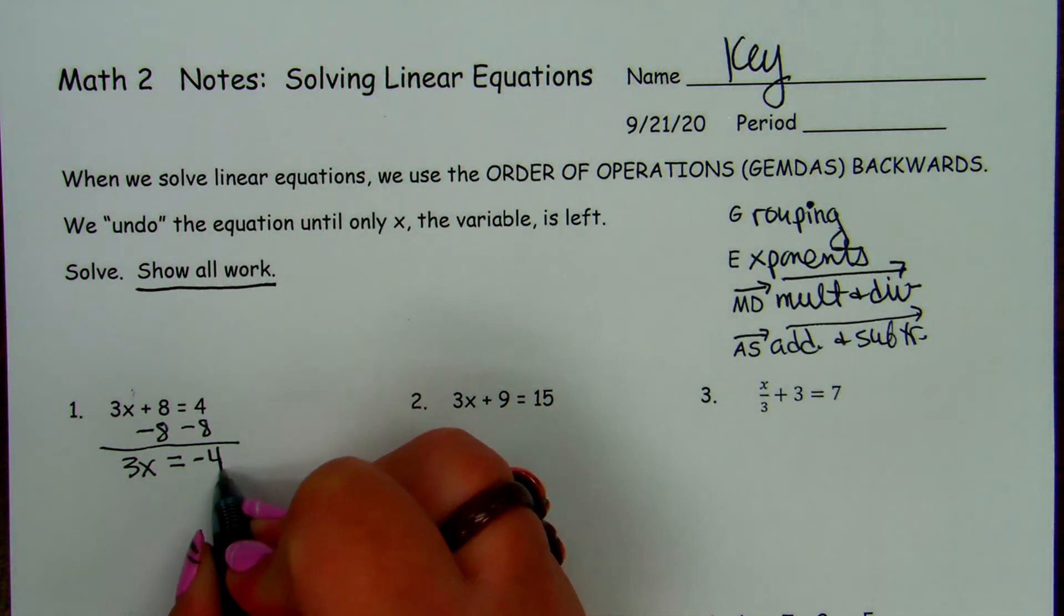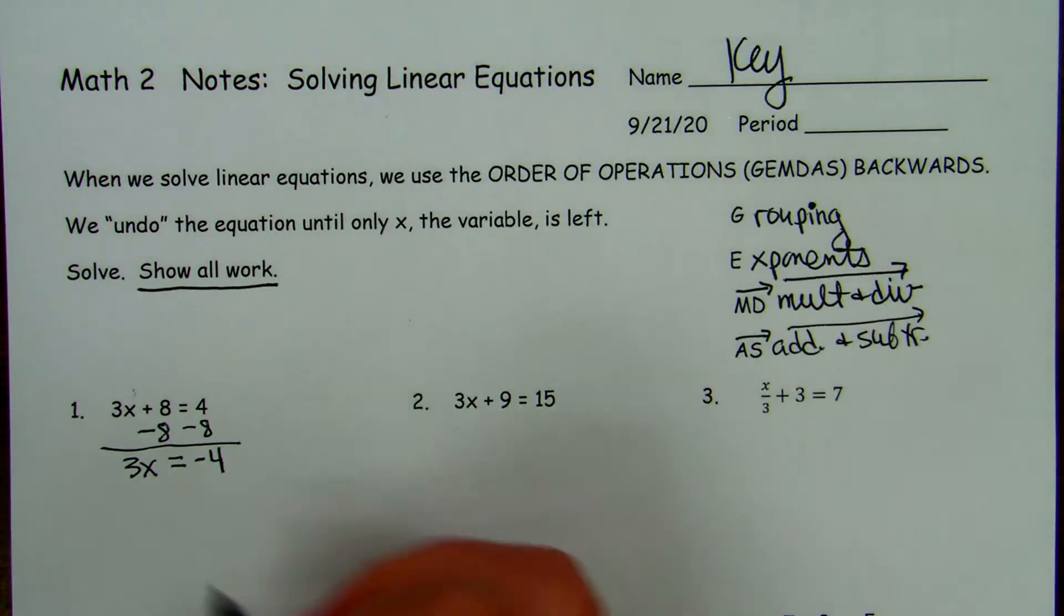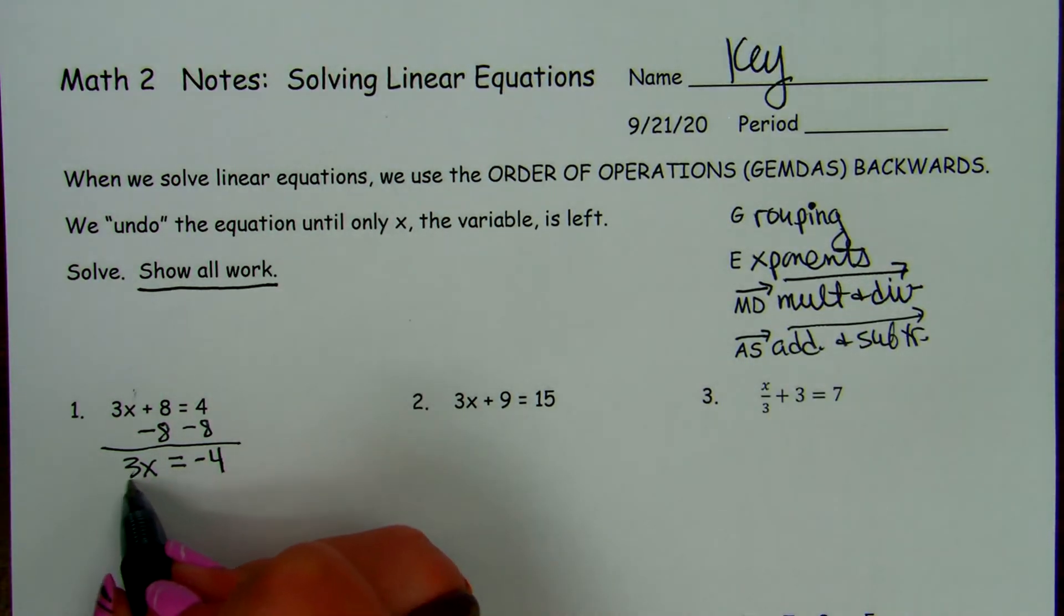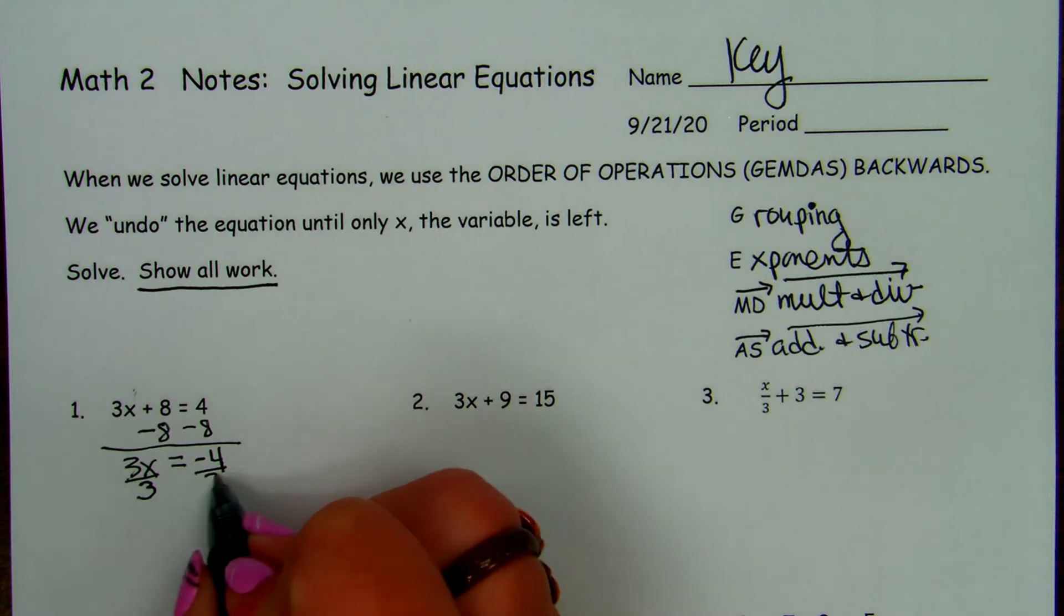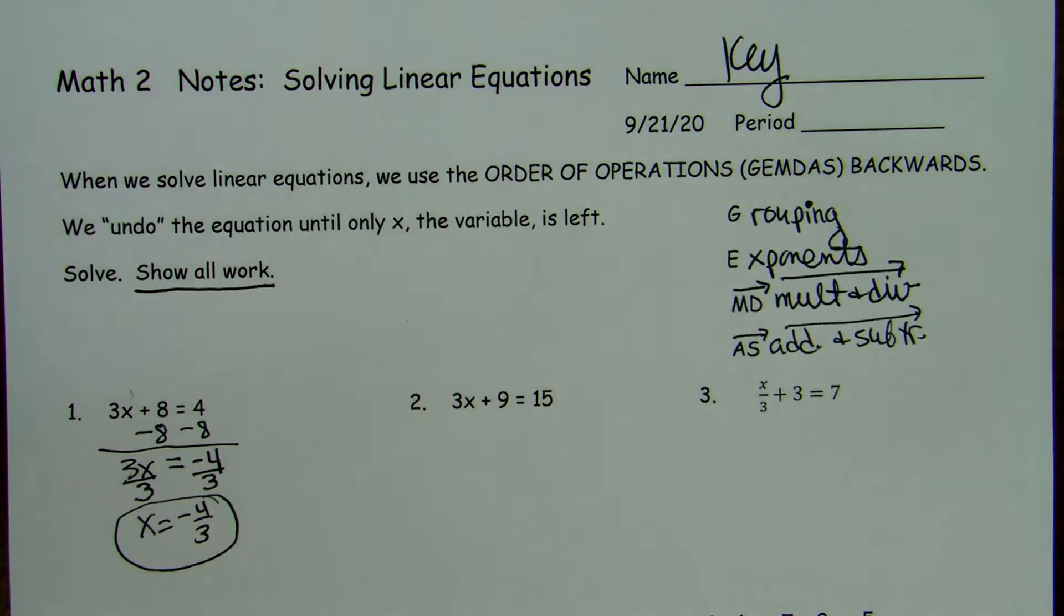And then after we do addition and subtraction, then we do multiplication or division. We have a 3x. So what do we do with the opposite of 3x? If they're multiplied, the opposite of multiplication is division. So x is negative 4 over 3. You divide both sides.